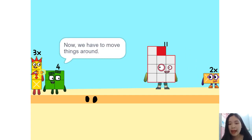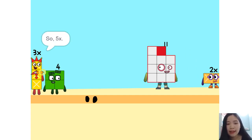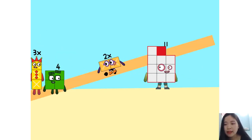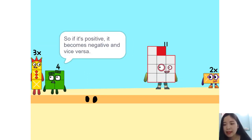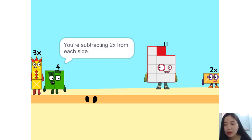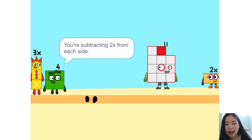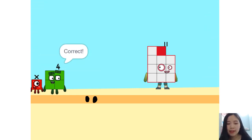We have to move things around — we have to move this 2x to this side. So, 5x. Whenever you switch sides, you have to switch its sign. If it's positive, it becomes negative and vice versa. Why? Think of it this way: you're subtracting 2x from each side. So it'd just be 1x, or x. Correct.